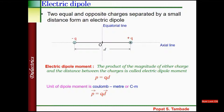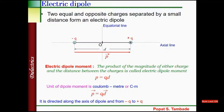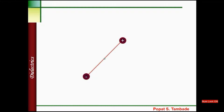What is the direction? Vector p is equal to q into vector d. Vector d is directed from minus q to plus q. So the electric dipole moment is along the axis of the dipole and directed from minus q to plus q, that is from negative to positive charge. So here p is directed from minus q to plus q.